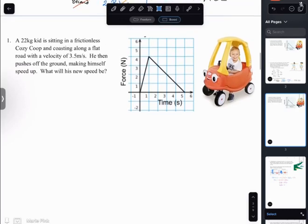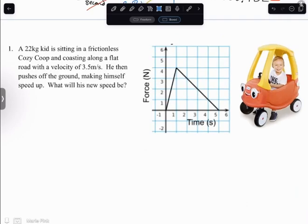So on this one, we have a force versus time graph, and we're going to try to figure out how much you're going to speed up or slow down. The way we're going to do that is to remember that the area underneath a force versus time graph is equal to your impulse. So this area of force versus time is impulse.